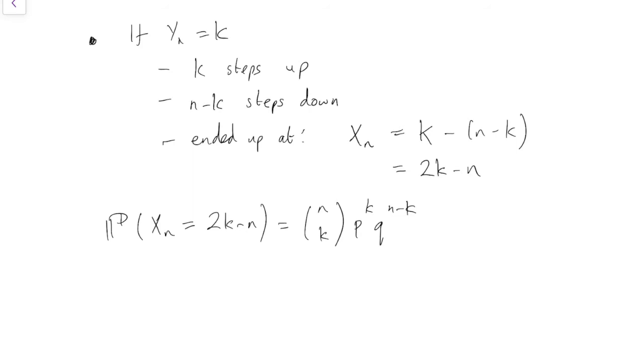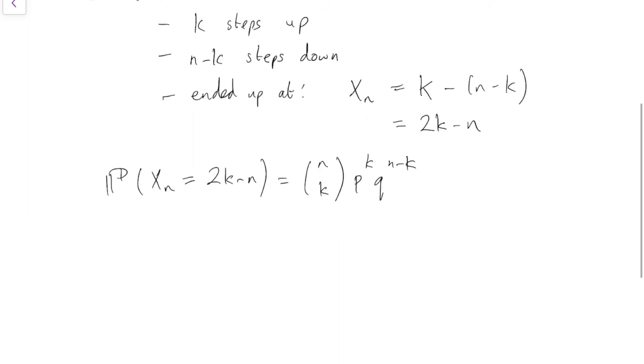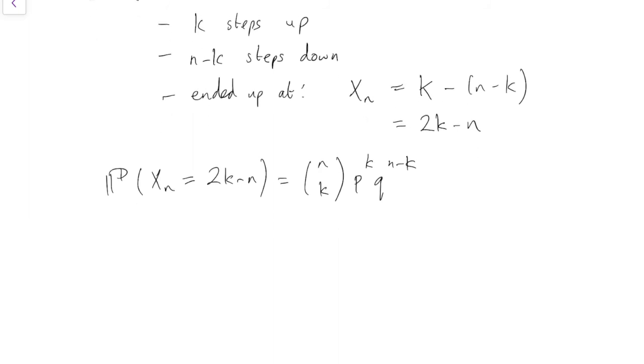Because if we're at an even, we go up or down one to end up at an odd. If we're at an odd, we move up or down one to get to an even. So that's what that 2k minus n number is there. That always has the same parity as n. If n is even, that number is even. If n is odd, that number is odd.